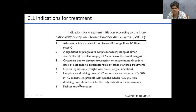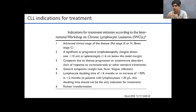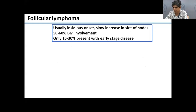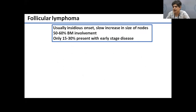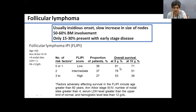Follicular lymphoma is conceptually similar — gradual onset, slow increase in lymph node size, often picked up incidentally on scans done for other reasons. Most patients present in late, advanced stage disease as they are nodal. Follicular lymphoma has its own IPI, which predicts overall survival at five and ten years, but does not determine whether to start therapy. It gives the clinician a tool for prognostication and patient counseling.